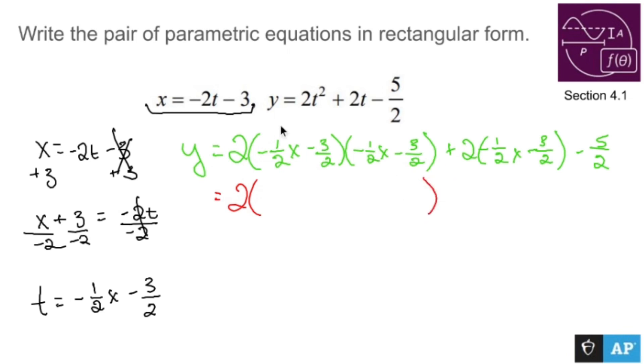So 2 is just living. Negative 1 half times negative 1 half is positive 1 fourth x squared. Negative times a negative is a positive. A half times 3 halves is 3 quarters. So plus 3 quarters, that's the same. Plus 3 quarters is 3 halves x. And then these are going to become plus 9 quarters. So let's scooch this over. That's minus x, that's minus 3 minus 5 over 2.